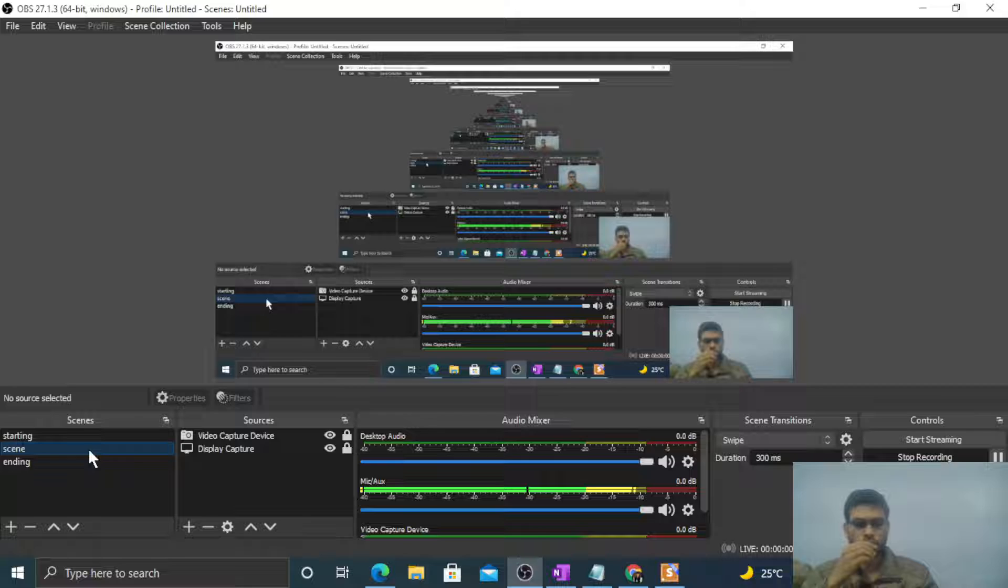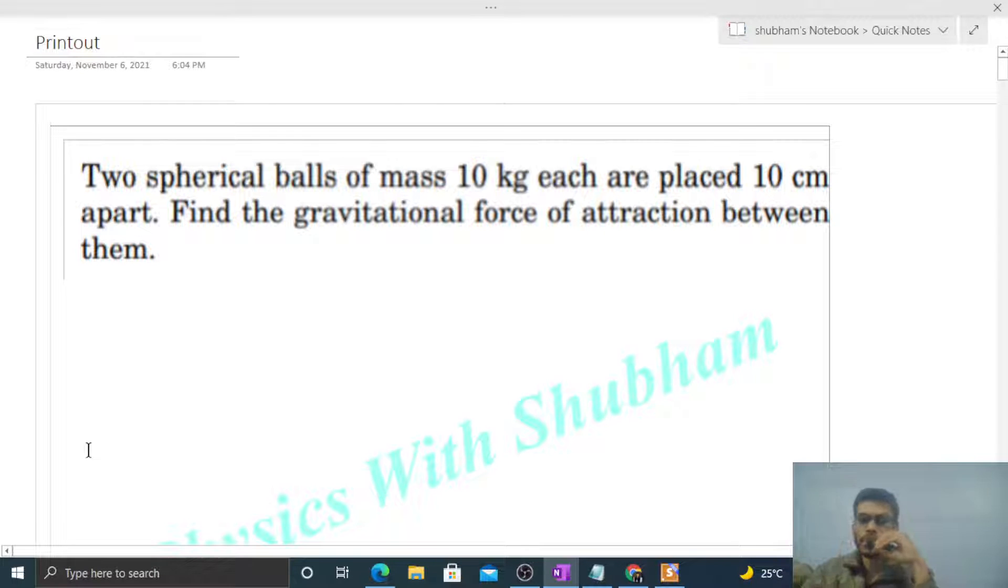Okay, hi everyone. So today let's discuss this interesting problem. It says two spherical balls of mass 10 kilogram each are placed 10 centimeter apart. Find the gravitational force of attraction between them. We have two balls of mass 10 kilogram each and they are separated by 10 centimeter, meaning the center to center distance is 10 centimeter.